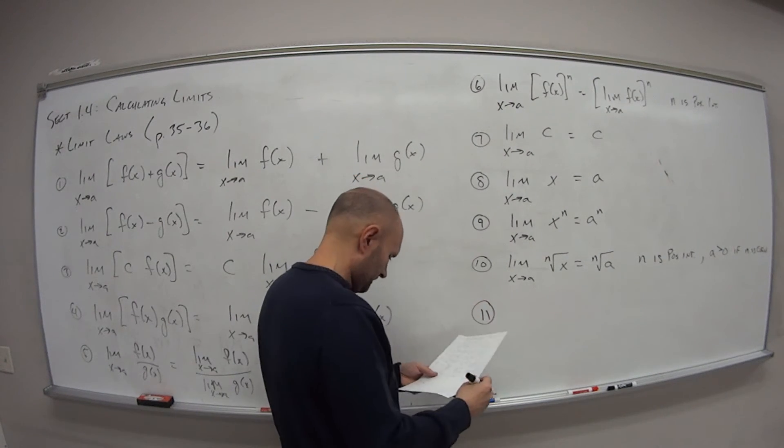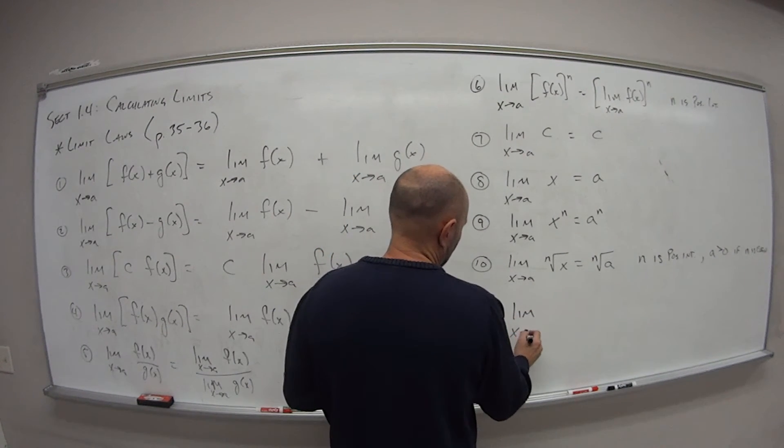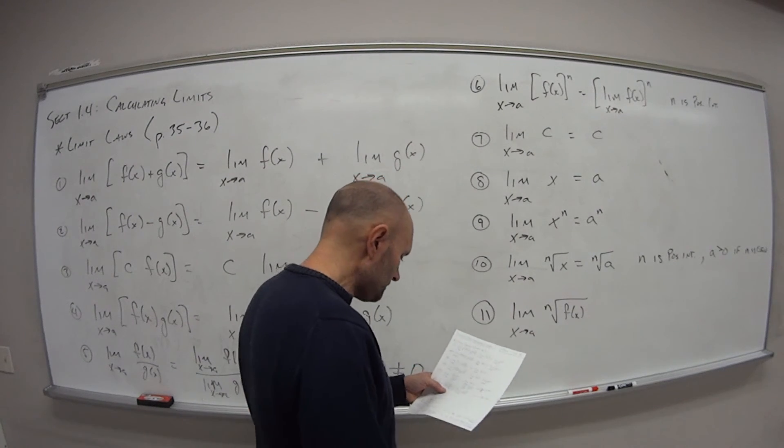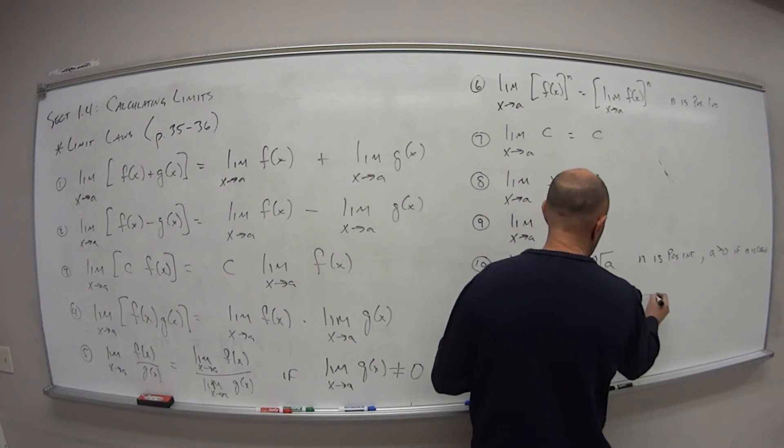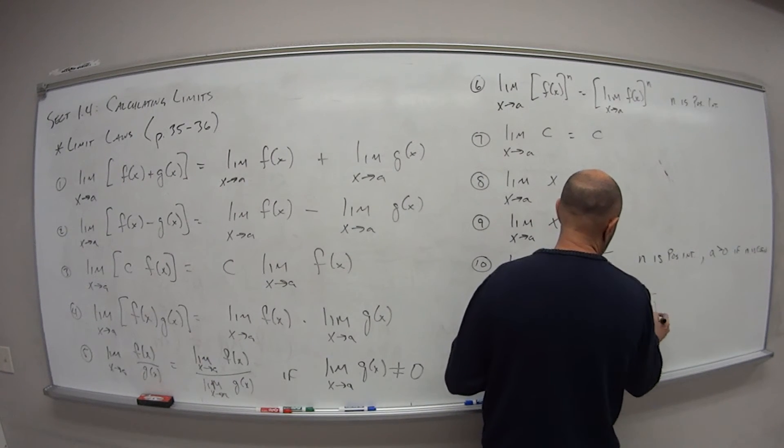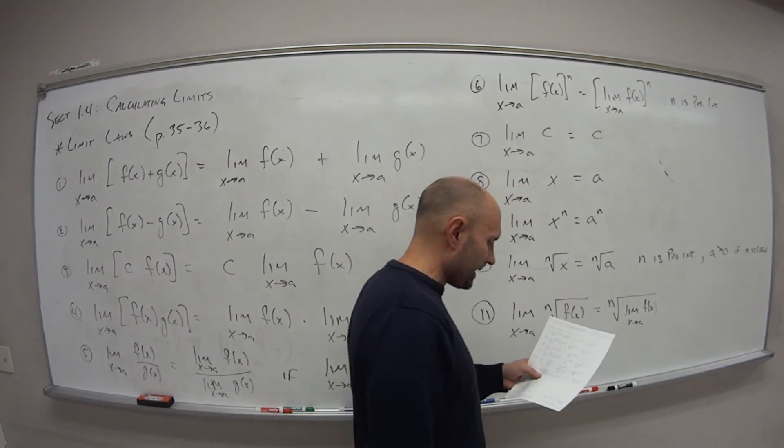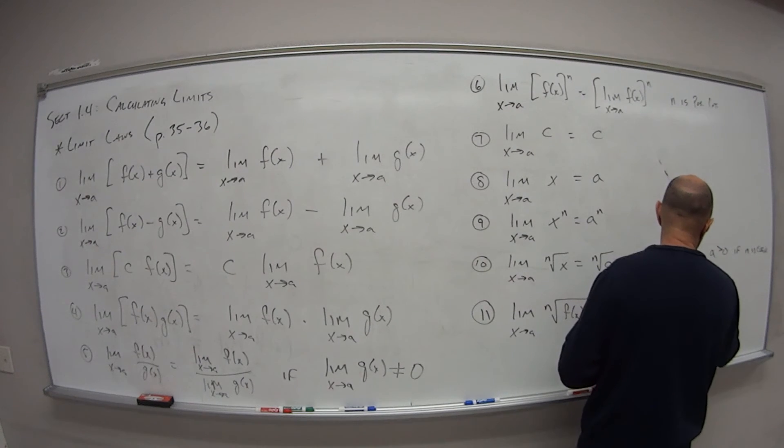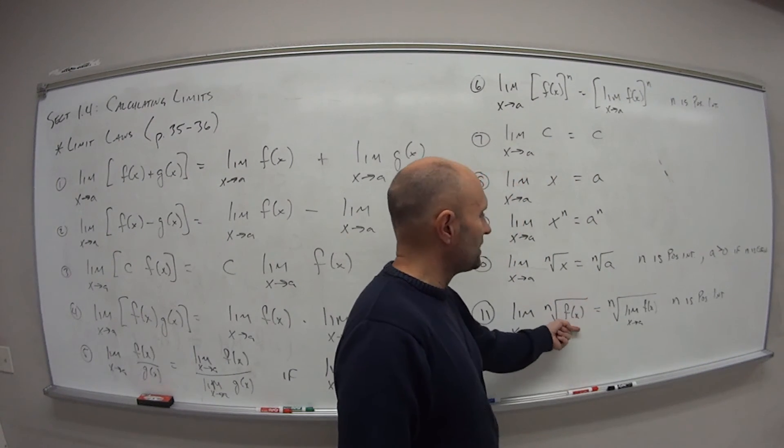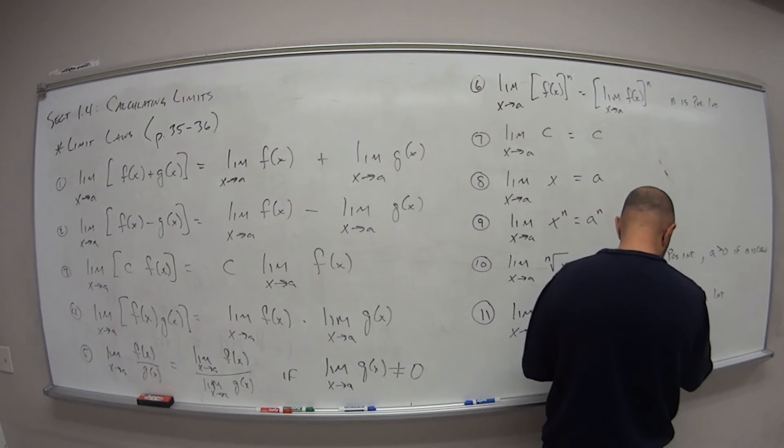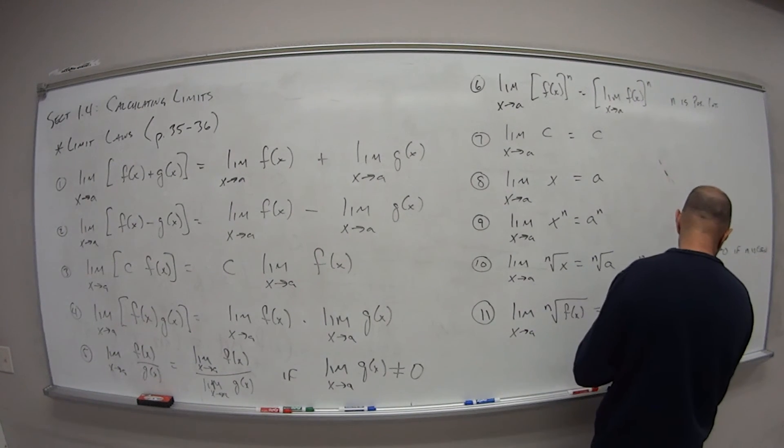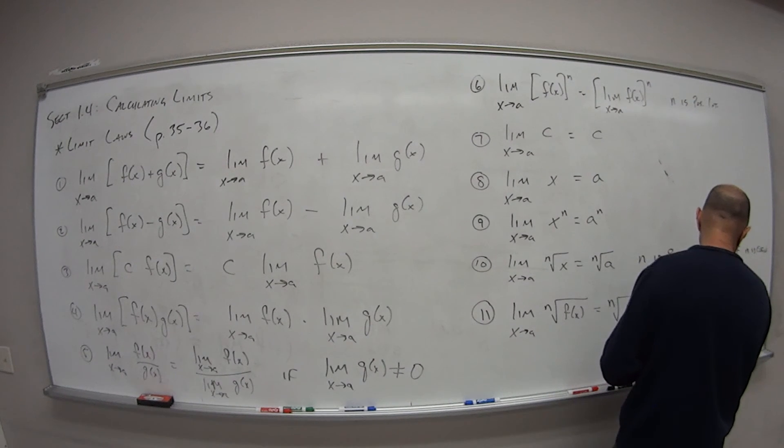And then lastly, number 11: the limit as x approaches a of the nth root of some other function f(x) is just equal to the nth root of the limit of that function, f(x), as x approaches a. And same idea as before: n is positive integer. And now here, the function itself—so f(x), the limit of f(x) as x approaches a has to be positive, has to be greater than zero if n is even.